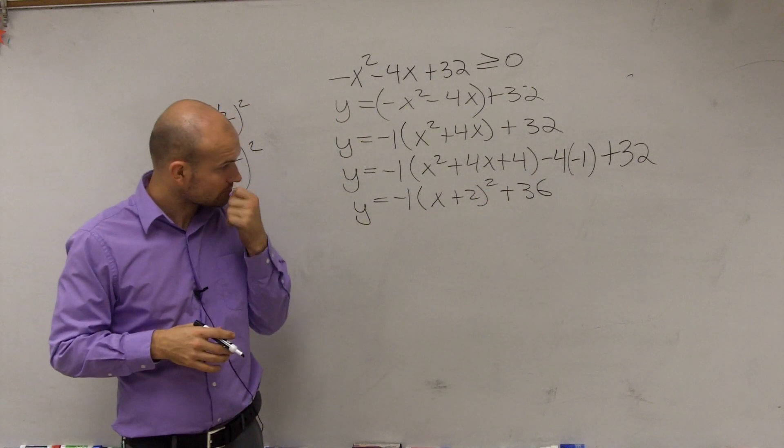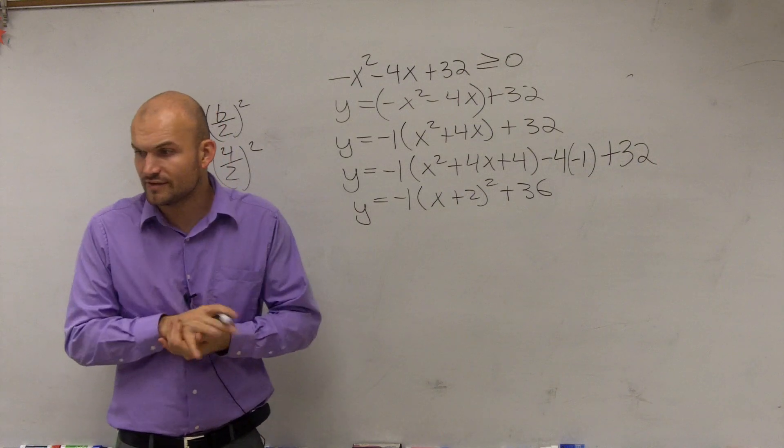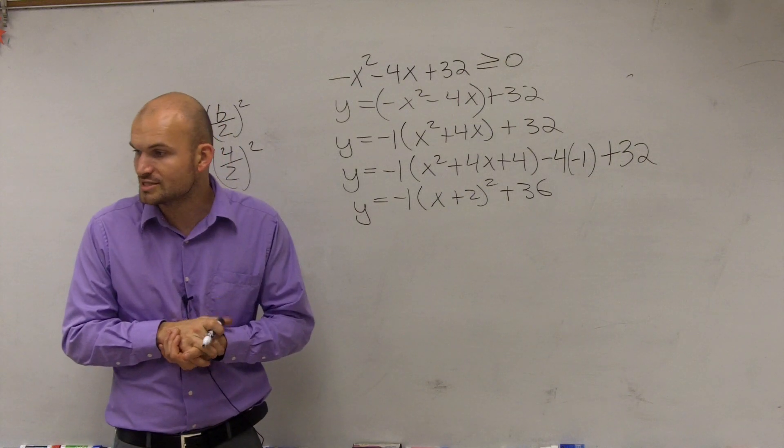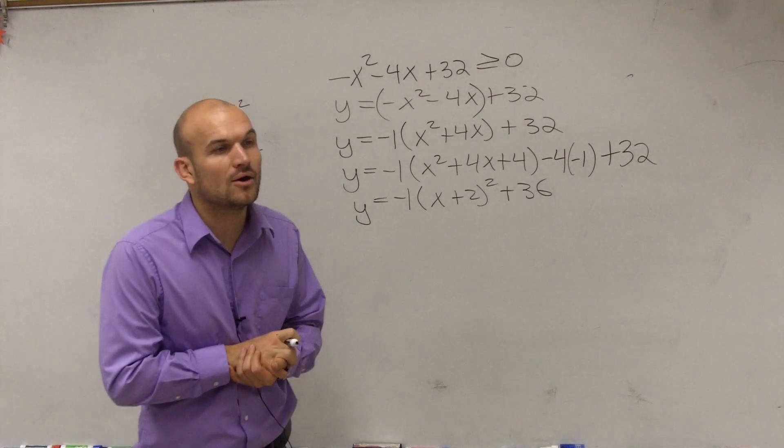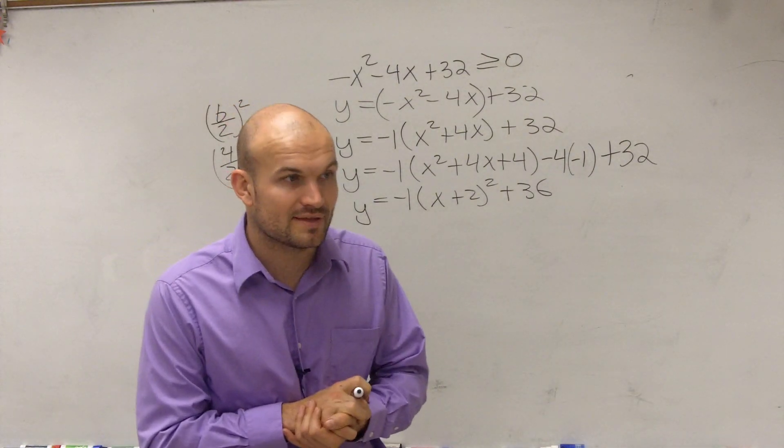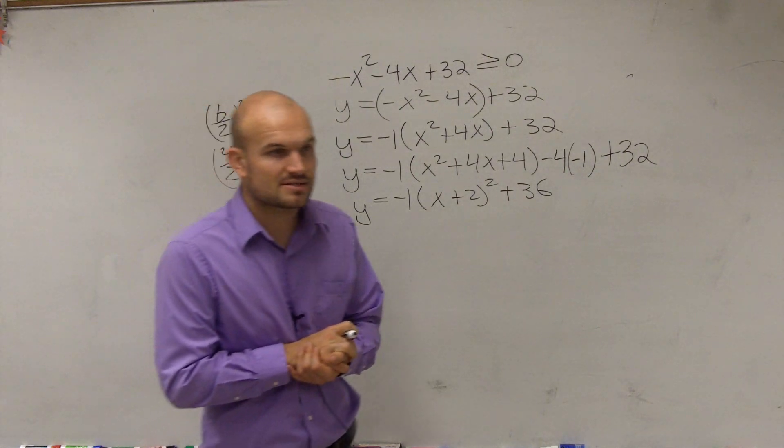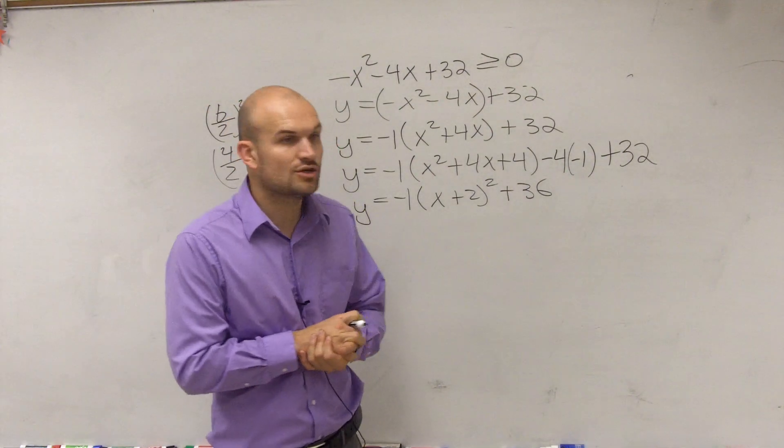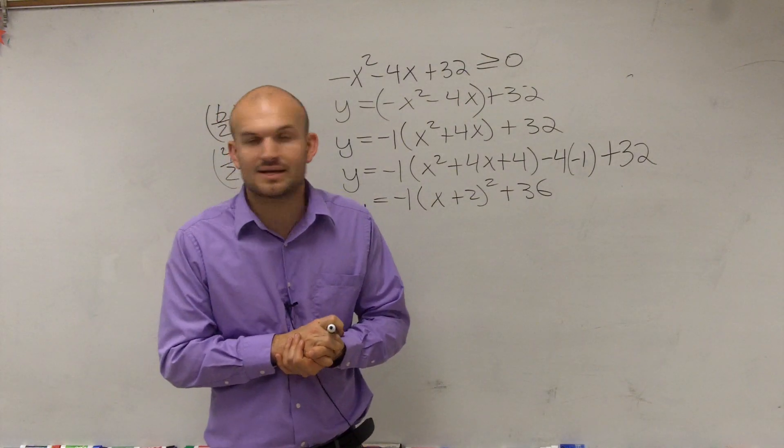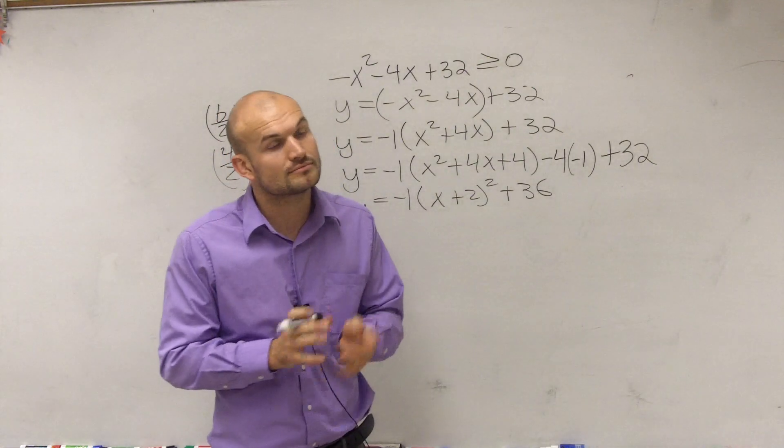Why do we want to get this into vertex form? Because remember, the negative 1 helps us describe our graph, how we're going to graph it. So now, ladies and gentlemen, we want to go ahead and graph this. So to go ahead and graph this, we can use a couple points. One, we can find the vertex. And then two, we can also find the x and y intercepts, and then kind of use symmetry to graph it.